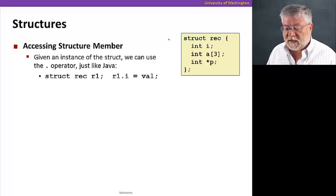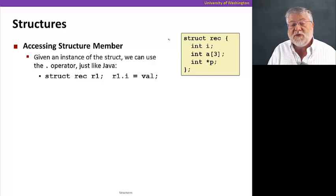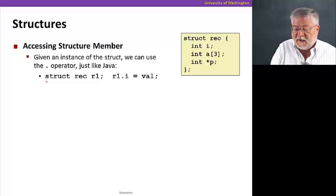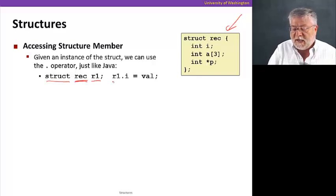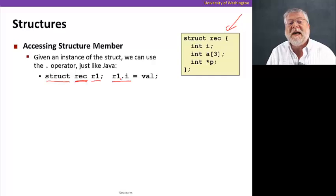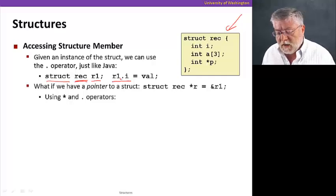So how do we access a structure member? Well, given an instance of a struct, we can use the dot operator just like in Java. For example, if we declare one of these structs that we've just defined, we can give it the name r1. Then we can refer to that first integer in r1 by writing r1 dot i. And that refers to just that first integer that is part of that larger struct that has a couple of other things in it.